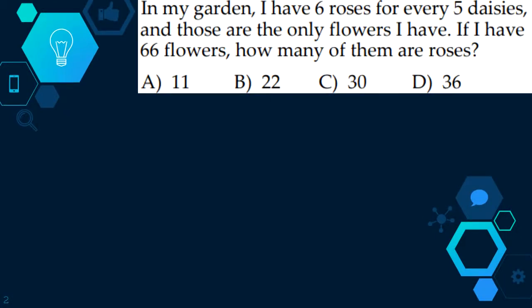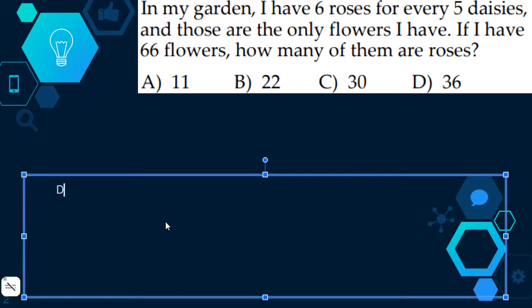In my garden, I have six roses for every five daisies, and those are the only flowers I have. If I have 66 flowers, then how many of them are roses? If we add up the six roses and five daisies, we'll get 11. And she says she has a total of 66, and 66 divided by 11 is 6. So we multiply the six roses by 6, which would get you 36. So our answer would be D, 36.